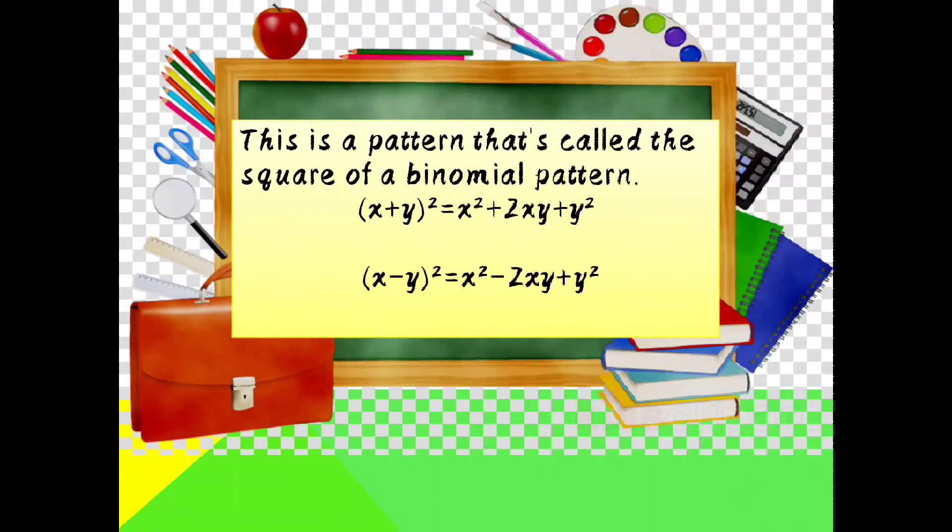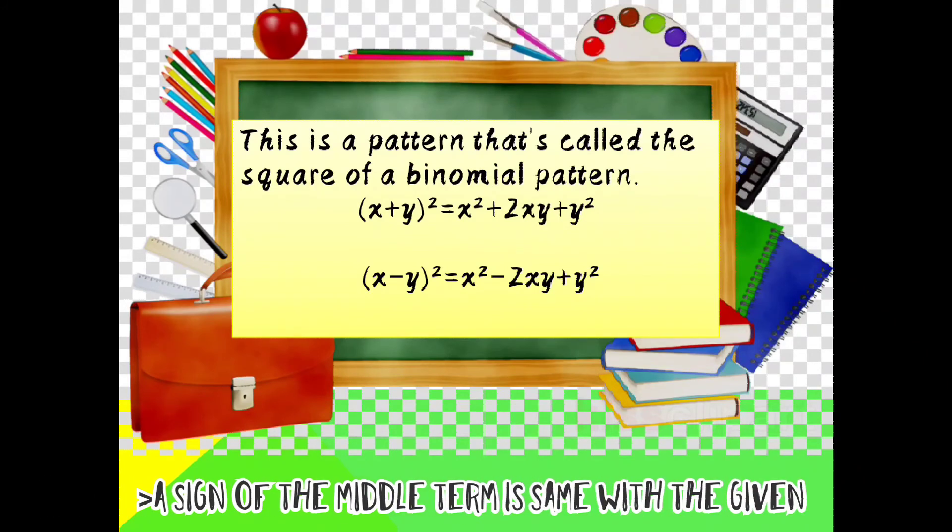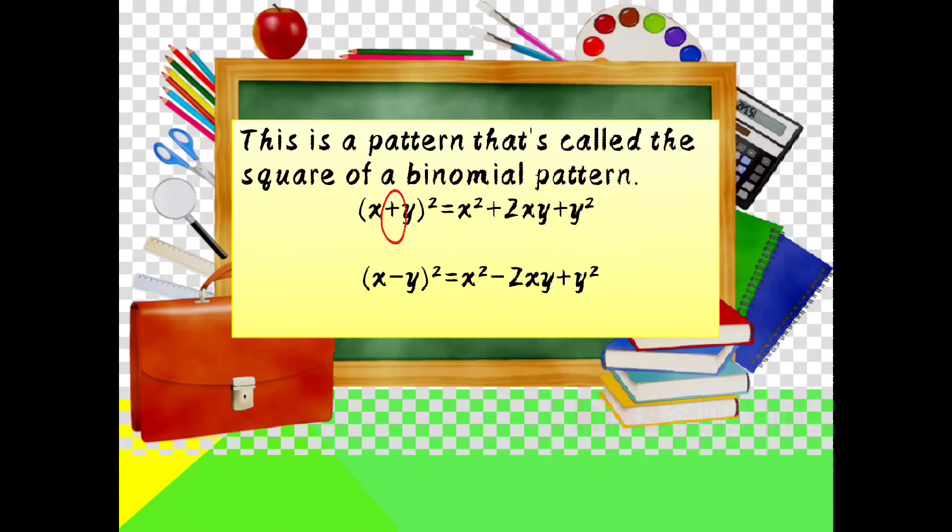This is the pattern that is called the square of a binomial pattern. Kung mapapansin natin, magkaiba ang sign na meron ang given. x plus y squared is equivalent to x squared plus 2xy plus y squared. x minus y squared is equal to x squared minus 2xy plus y squared. Kung papansin ninyo, yung middle term nila ay katulad ng sa given. Kung positive ang given, positive din ang middle term. Kung minus ang given, minus din ang middle term.